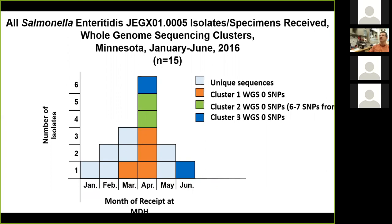Then you have cluster three — two isolates that differ by zero SNPs from each other. So this gives you basically three clusters to investigate: one, two, and three. But in the back of your mind, you're thinking one and two could be connected to each other because those only differ by six to seven SNPs from each other.